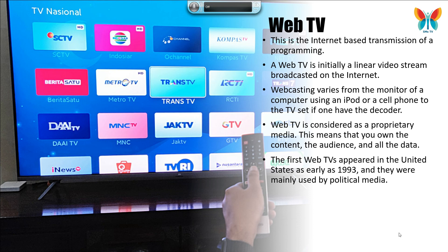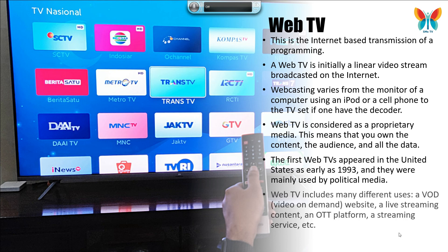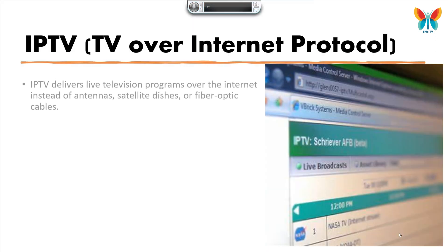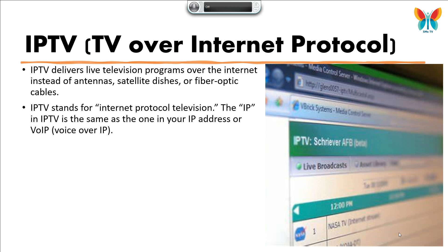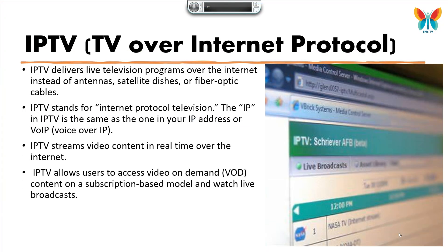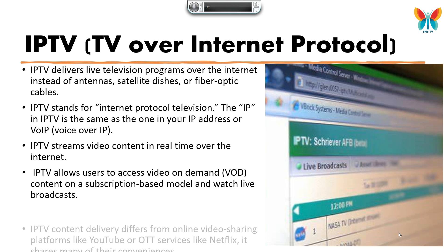IPTV, or TV over internet protocol, delivers live television programs over the internet instead of antennas, satellite dishes, or fiber optic cables. IPTV stands for internet protocol television. The IP in IPTV is the same as in your IP address or VoIP (voice over IP). IPTV streams video content in real time over the internet and allows users to access video on demand (VOD) content on a subscription-based model and watch live broadcasts. IPTV content delivery differs from online video sharing platforms like YouTube or OTT services like Netflix, though it shares many of their conveniences.